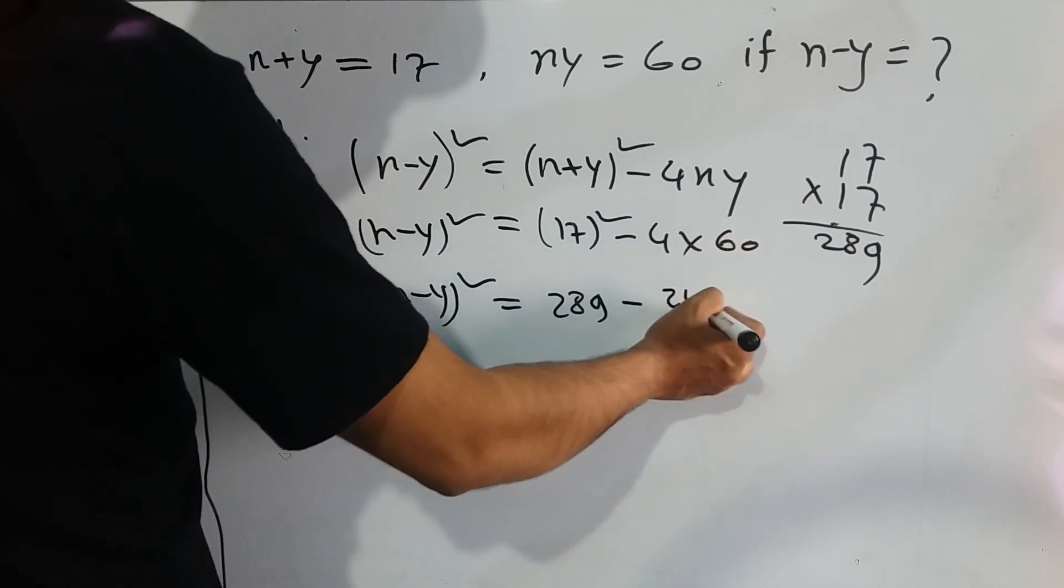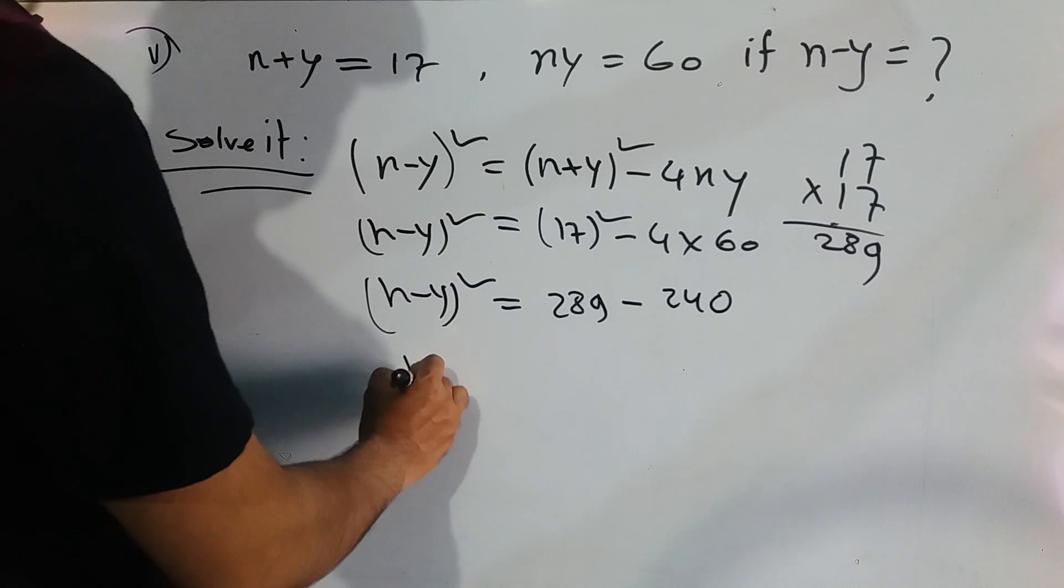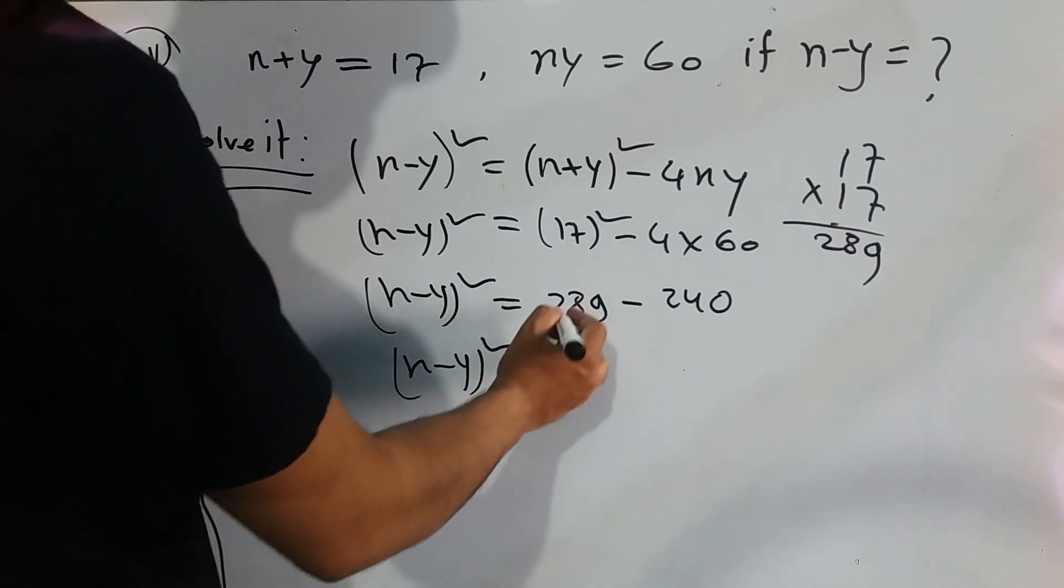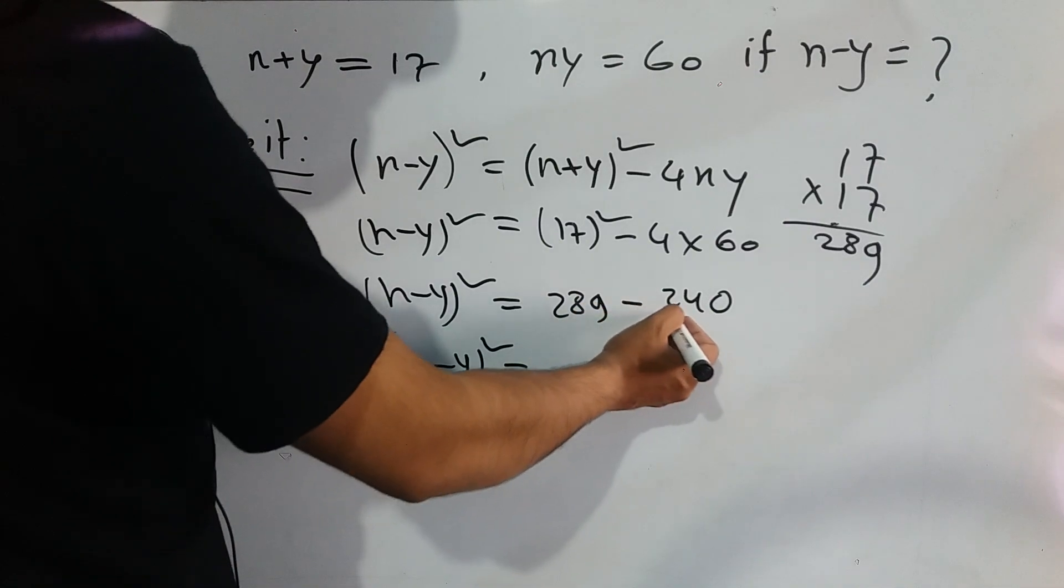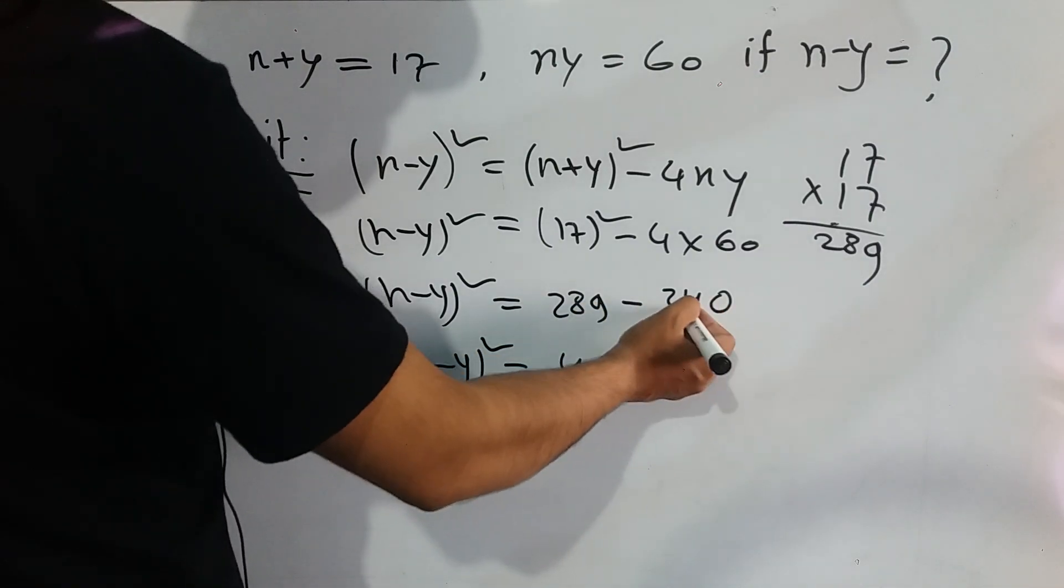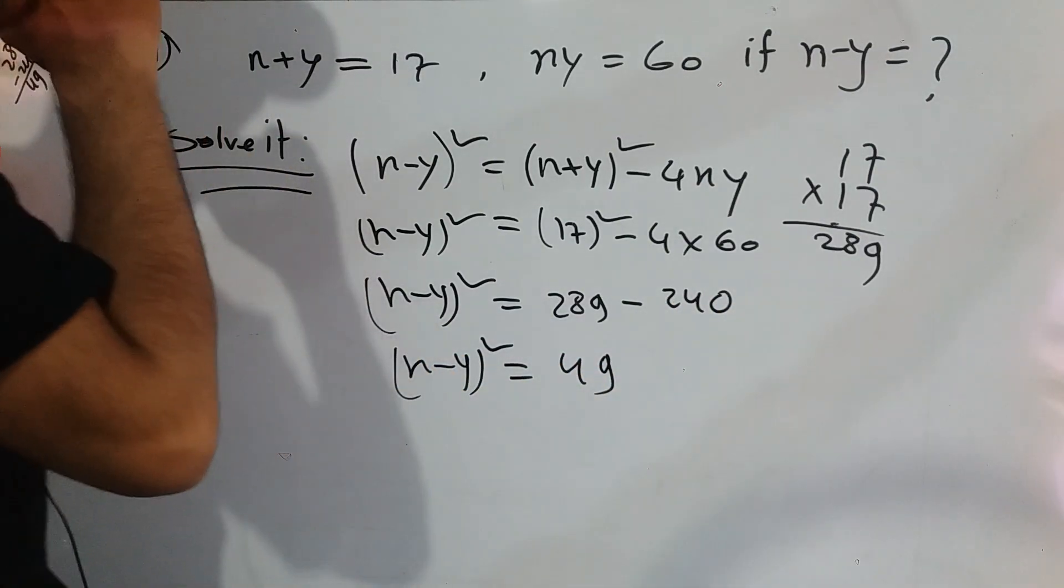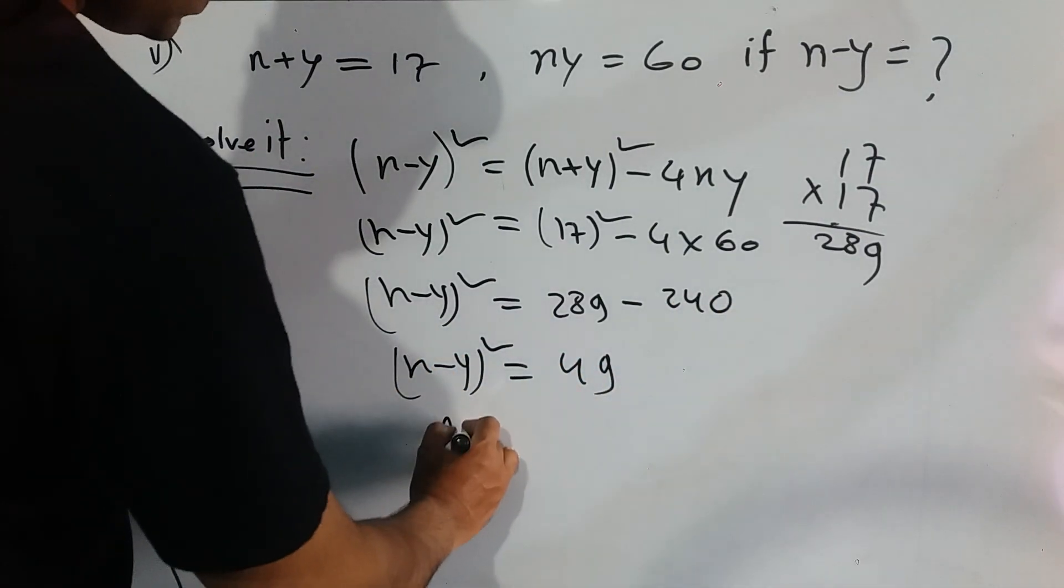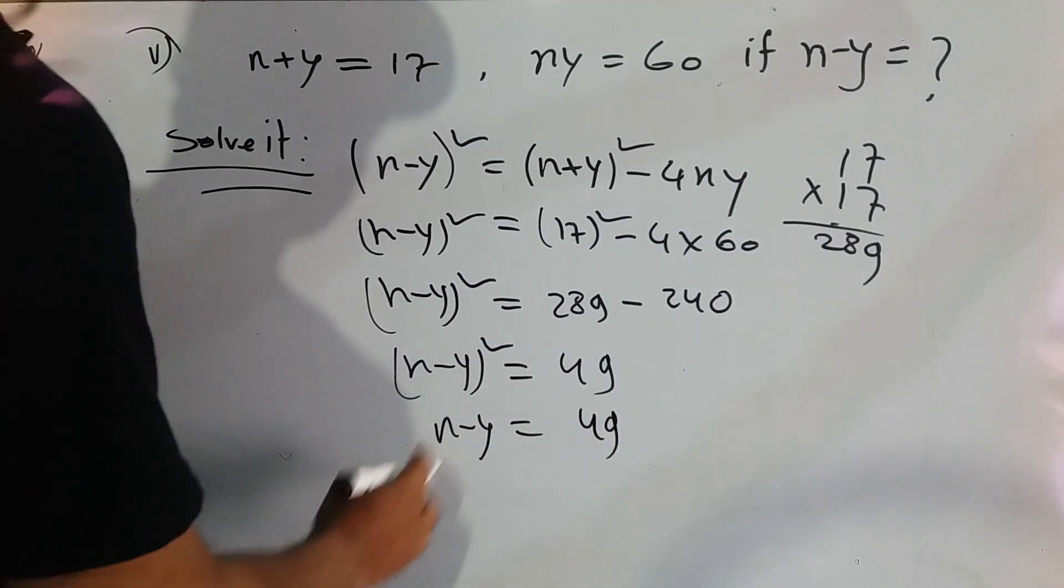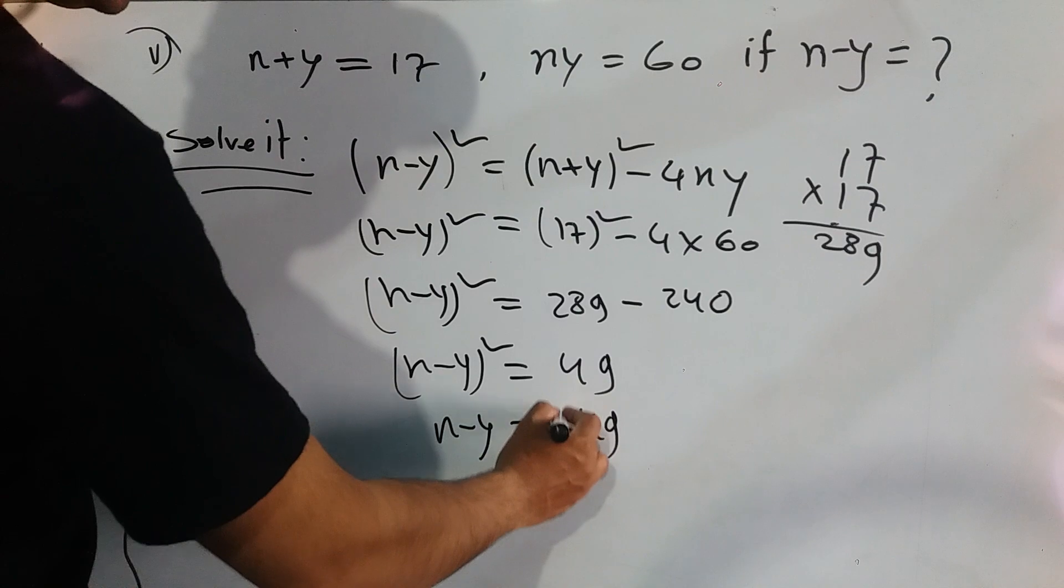So x minus y whole square equals 289 subtract 240, we will get 49. And then x minus y equals, we write down 49, and square equals, right side going to root, root 49.